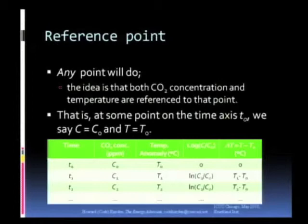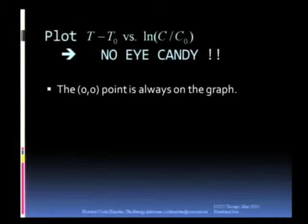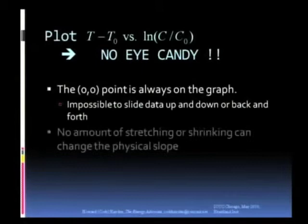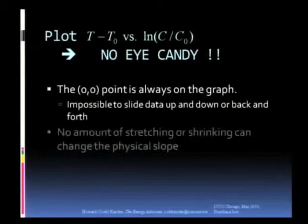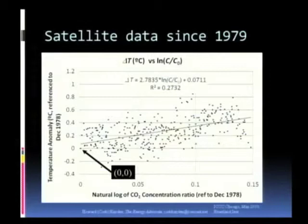Notice, by the way, that there is a zero on each scale. Plot those data. And we don't get any eye candy because the 00 is always on the graph. It is impossible to slide one graph up and down relative to the other or back and forth. It's impossible. You can stretch it if you want to, but you never change the physical slope.